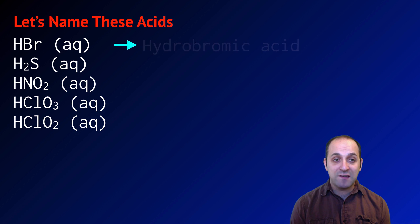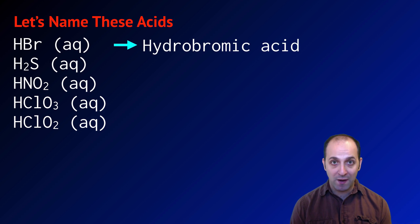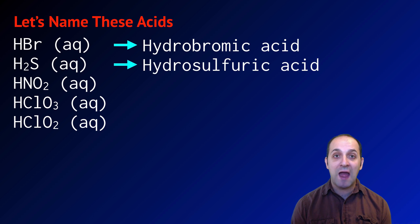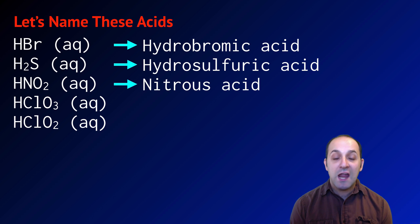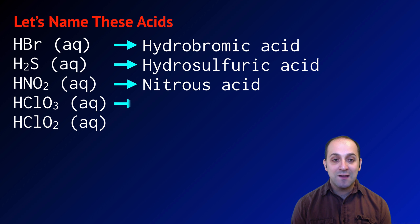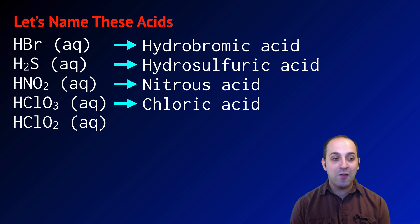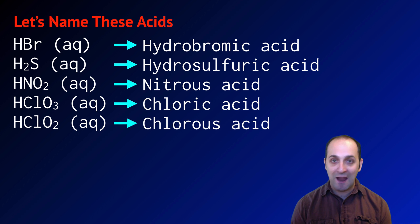HBr is a binary acid, so its name is hydrobromic acid. H₂S is also a binary acid, so its name is hydrosulfuric acid. HNO₂ is a ternary acid — NO₂⁻ is nitrite — so that's nitrous acid. HClO₃ is a ternary acid — ClO₃⁻ is chlorate — so this is chloric acid. And HClO₂: ClO₂⁻ is chlorite, so this is chlorous acid. If you have questions, write them down before we move on to talk about bases.